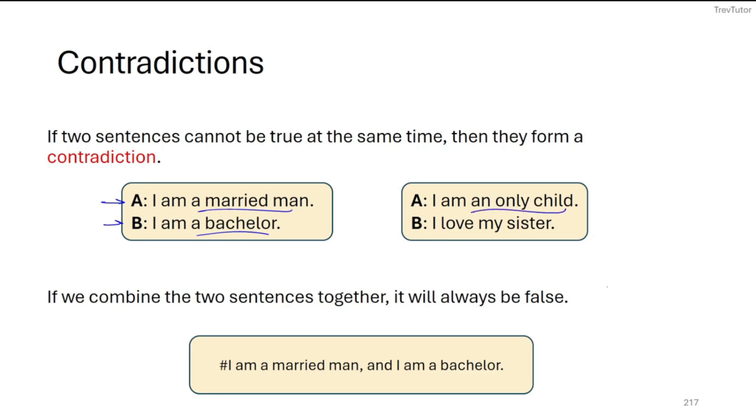Or I am an only child, meaning you don't have any siblings. And then you say, I love my sister. Well, a sister is a sibling. So you can only be one of those two things. So those are examples of contradictory sentences.